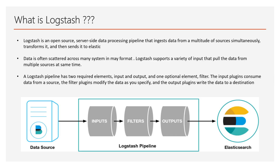Data is often scattered across many systems in many formats. Logstash supports a variety of inputs that pull data from multiple sources at the same time. The Logstash pipeline has two required elements — input and output — and one optional element, which is filter. The input plugin consumes data from the source, the filter modifies the data as you specify, and the output plugin writes the data to Elastic.